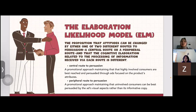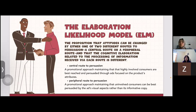The central route to persuasion is a promotional approach maintaining that highly involved consumers are best reached and persuaded by ads focused on product attributes. The peripheral route to persuasion is a promotional approach maintaining that uninvolved consumers can be best persuaded by the ad's visual aspects rather than its informative copy.